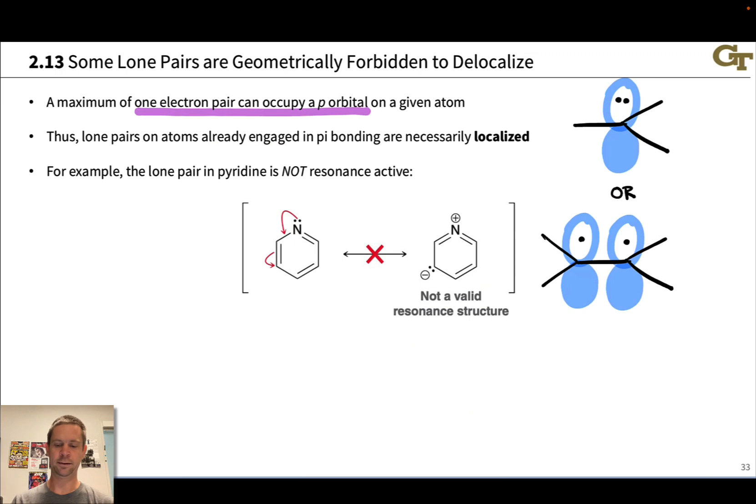The implication of this is if you've already got a pi bond at some atom and it's got a lone pair as well, that lone pair is not engaged in resonance. That lone pair is not resonance active. Lone pairs on atoms that are already engaged in pi bonding are necessarily localized. They're sitting in hybrid orbitals.